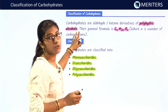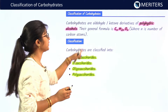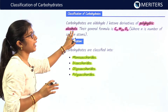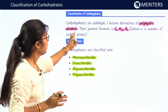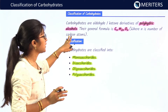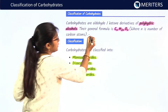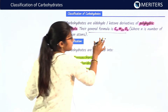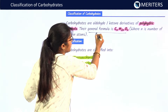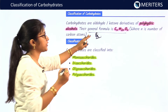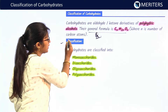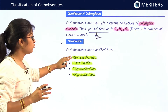First of all, we should know what carbohydrates are. Carbohydrates are the aldehyde or ketone derivatives of polyhydric alcohols. Their general formula is CₙH₂ₙOₙ, where n is the number of carbon atoms. This general formula has been asked in exams, so note how important this topic is.